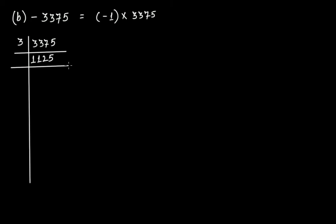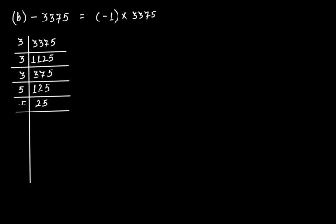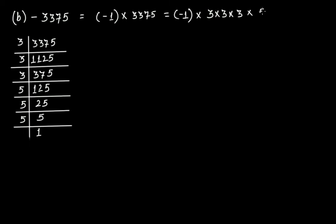Checking again, the digit sum is 9, so still divisible by 3, giving further factors. Then we reach 125 which is the cube of 5: 5 multiplied by 5 multiplied by 5. So minus 3375 can be written as minus 1 multiplied by 3 multiplied by 3 multiplied by 3 multiplied by 5 multiplied by 5 multiplied by 5. This can be written as minus 1 whole cubed, multiplied by 3 cubed, multiplied by 5 cubed.